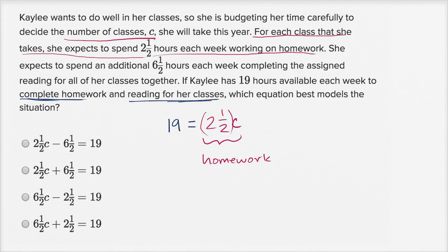And how much is she going to spend on reading? Well, it says over here she expects to spend an additional 6½ hours each week completing the assigned reading for all of her classes together. So this sentence says it doesn't matter how many classes she takes, she's going to spend 6½ hours reading. So it's not dependent on the number of classes she takes. So this is the amount of time she's just going to spend reading. And so the amount she spends on homework plus the amount she spends on reading need to add up to 19 hours.